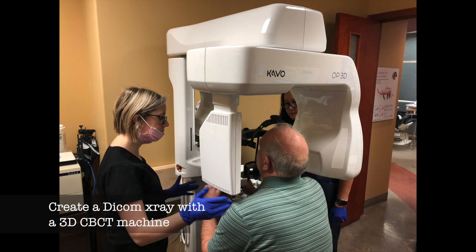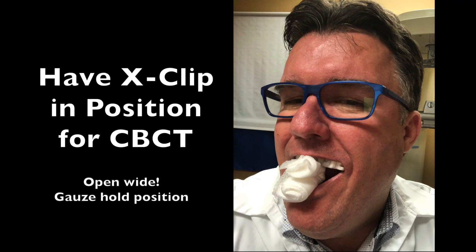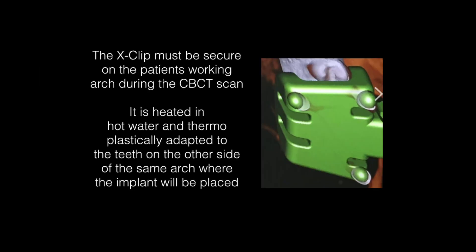We first want to take a CBCT scan of the patient, but it's very important to have the X-Clip — which is provided for the system — in the patient's mouth at this time. The X-Clip must be secure on the patient's working arch during the CBCT scan. This is a small device that is heated up in a hot water bath and thermoplastically changed, then adapted to the same arch where you're going to place the implant. You place this in and have it snap over the undercuts. You'll notice it has three small round balls — these are fiduciary markers, which will help you to line up the handpiece to the patient during the surgery.